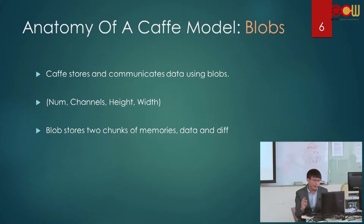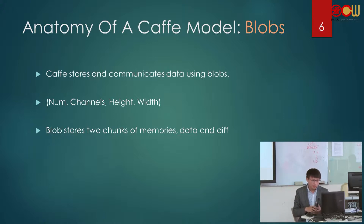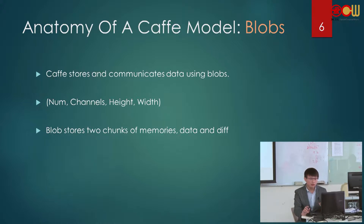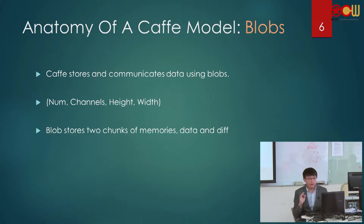Like AlexNet, which we mentioned in the last presentation, the training batch size is N equal to 256. The second index is channels, which represents the feature dimensions. For example, if I have an RGB image, it has three channels, so we set C equal to three.